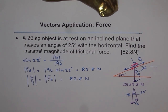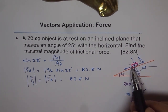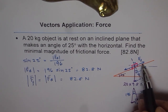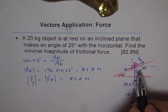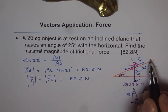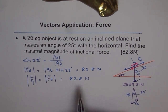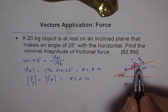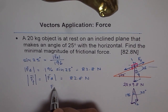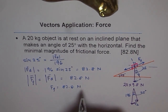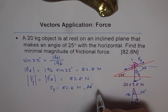The state of equilibrium is achieved when all forces acting at a point sum to zero. Since these two forces are equal in magnitude and opposite in direction, they add up to zero. The friction force acts at 25 degrees along the inclined plane. So the friction force has a magnitude of 82.8 newtons and acts at an angle of 25 degrees with the horizontal.